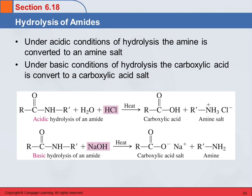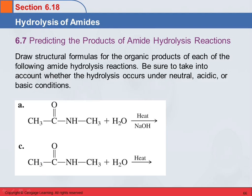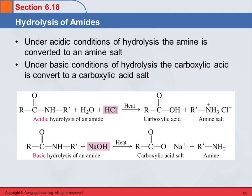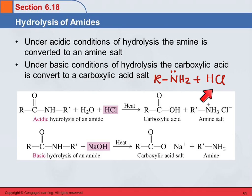Because what happens when we react an amine with an acid? So RNH2 — there's that lone pair — and here we have HCl. The amine is a base, so it's going to accept the hydrogen from the acid, and it's going to form an amine salt.